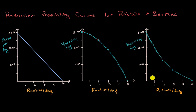The first thing I'm going to ask you is: which one describes a scenario where, for every extra rabbit I catch — every incremental rabbit — I'm giving up more and more in terms of berries? Another way of thinking about it is, as I catch more and more rabbits, the opportunity cost in terms of berries is increasing. Which one of these curves describes that?